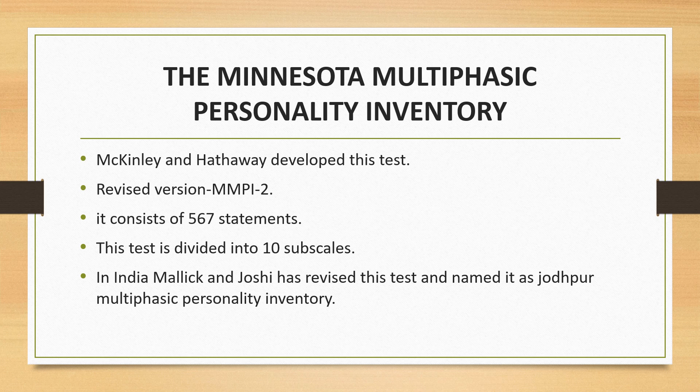The test is divided into 10 subscales which seek to diagnose: hypochondriasis, depression, hysteria, psychopathic deviate, masculinity and femininity, paranoia, psychasthenia, schizophrenia, mania, and social introversion. In India, Malik and Joshi have developed the Jodhpur Multiphasic Personality Inventory along the lines of the MMPI.